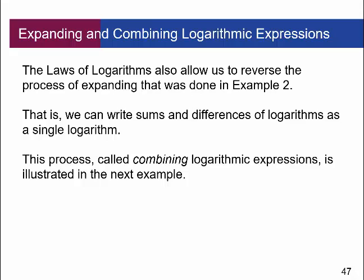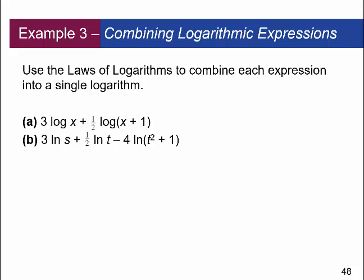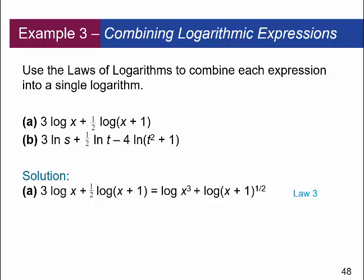The laws of logarithms also allow us to reverse the expanding process — we can write sums and differences of logs as a single log. This process is called combining logarithmic expressions. For example, 3 log x plus one-half log of x plus 1: first bring the coefficients up as exponents using law 3, then combine the addition as multiplication to get log of x cubed times x plus 1 to the one-half power. Now it's a single log.